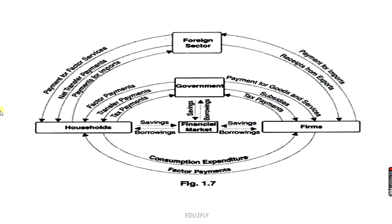Lastly, there is the foreign sector. The foreign sector receives revenue from firms, households, and governments for the export of goods and services. It makes payments for the imports of goods and services from firms and government, and also makes payments for factor services to the household. The savings of the household, firms, and government sector accumulate in the financial market. The inflows of money in the financial market are equal to the outflows of money, and this makes the circular flow of income complete and continuous.